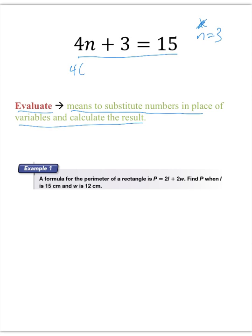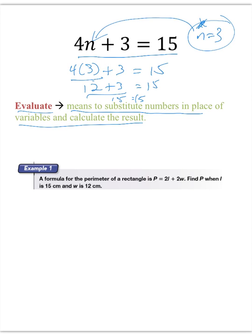So it's going to be 4 times 3, plus 3 is equal to 15. You know that that's 12, plus 3 is equal to 15. And you know that is 15 is equal to 15. So that's how you substitute, is you plug in that value for n and solve it.